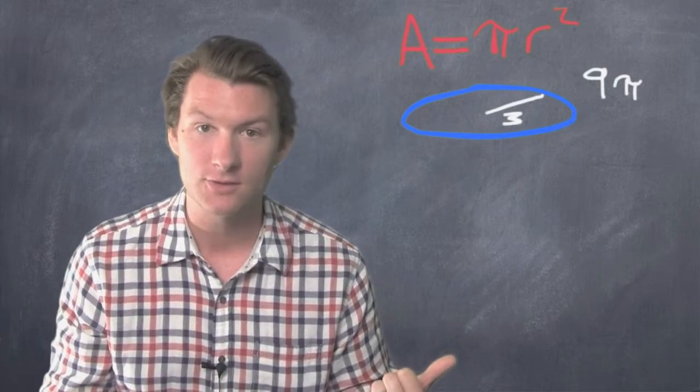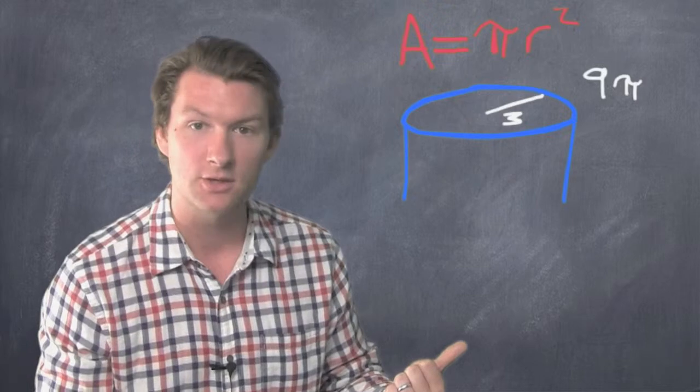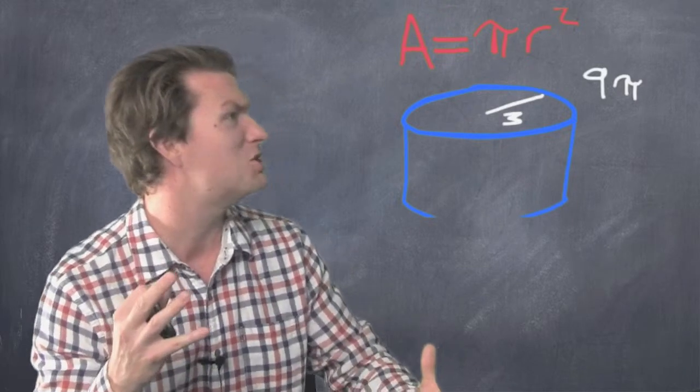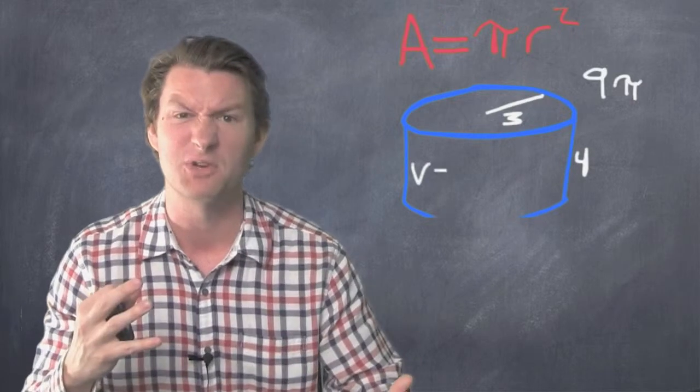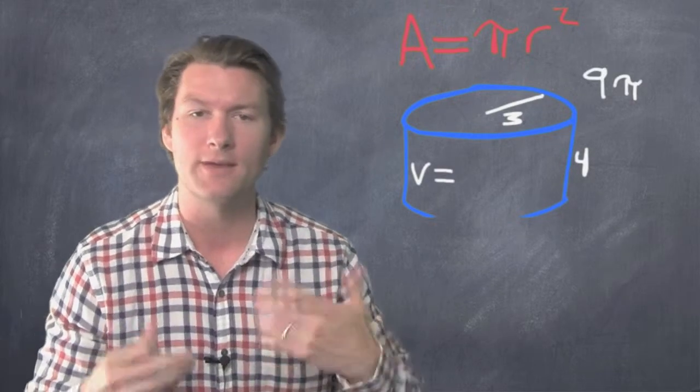Let's take this circle here and turn it into a cylinder. So we pull it into the third dimension. And let's say it's four tall. That's how much into the third dimension it is. So we've got to find the volume of it.